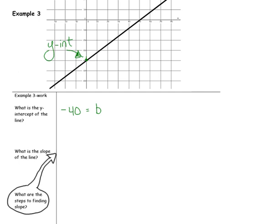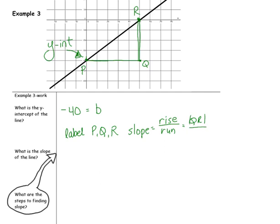Next, the slope of the line. To find the slope of the line, remember to label p, q, and r. I'll use this for point p, and then I need to locate point r at an integer — that'll be right over here on the x-axis. Label it r. Now, see where they intersect at a right angle, and label that point q. Recall that your slope is the rise over the run. The rise is the distance between q and r, and the run is the distance from p to q. Our run is 5, and our rise is 4. So, we have a slope of 4 over 5.